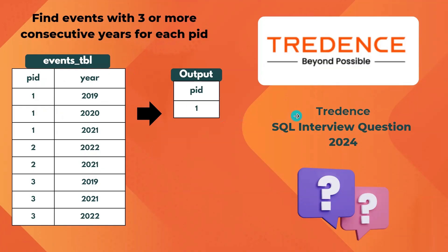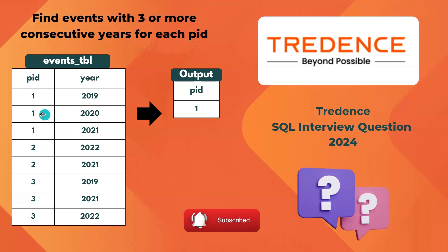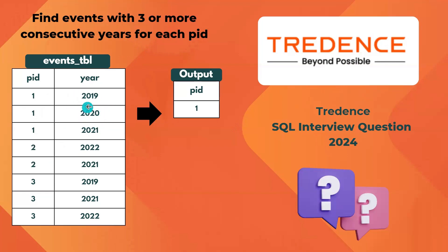Hello everyone. In this video I will be covering one of the SQL entry questions recently asked in a Cadence interview. Given an event table, we need to find events with three or more consecutive years for each ID. We have different IDs available — ID1, ID2, ID3 — and for each ID we need to check if the years are consecutive.